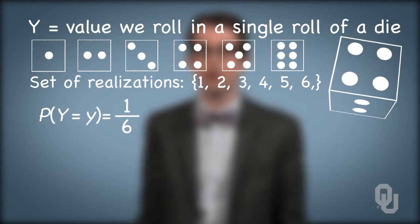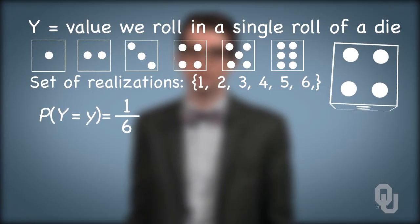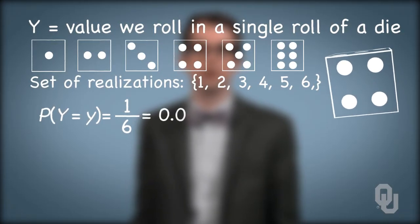The distribution of the roll of a die is probably what you'd expect it to be: six realizations, each occurring with the probability 0.167.